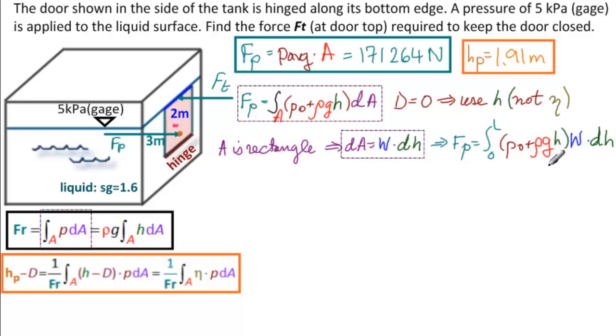We separate this into two integrals, taking out the constants. So Fp equals P0W up front here, left with the integral from zero to L of dH plus rho GW times the integral from zero to L, H dH. These are both straightforward integrals. The integral of dH is H, so we just get L. The integral of H dH is H squared over two, so we get L squared over two.